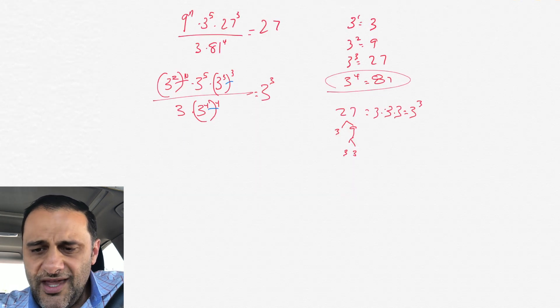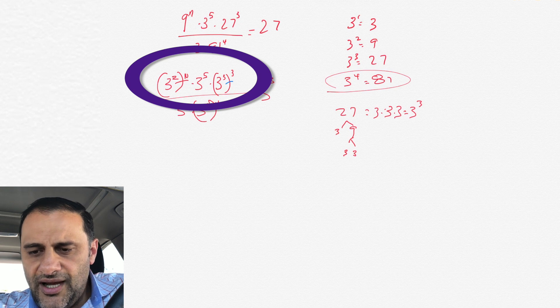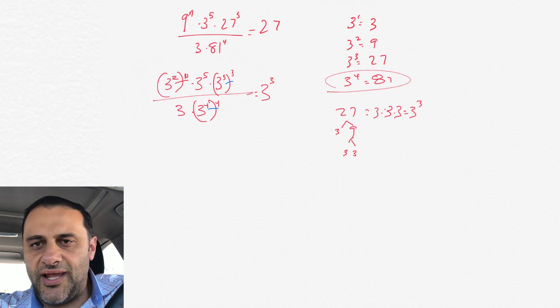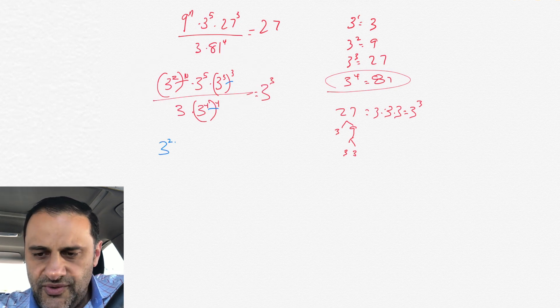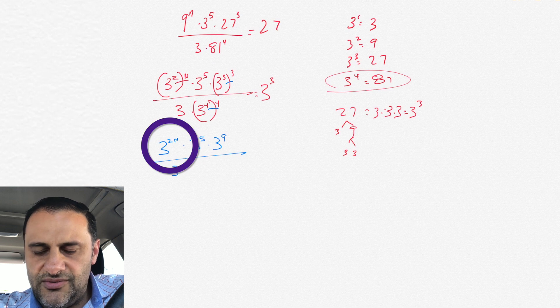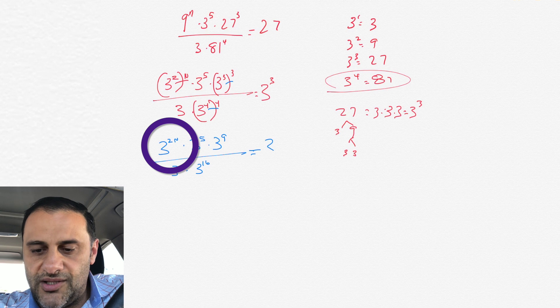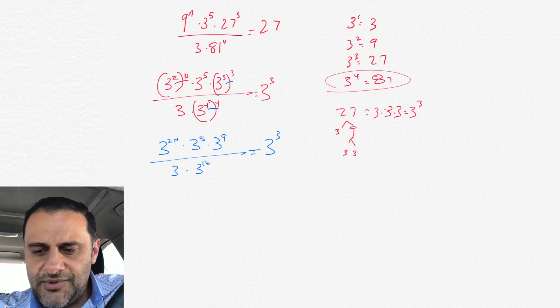Now what we need to do, if you look at the numerator, which is the top of the left part of the equation, we have exponents raised to exponents, so the order of business, we got to do those first. When we have like 3 to the 2 to the n power, we multiply that. We don't add those, we multiply those. So that's 3 raised to the 2n, and then times 3 to the 5.